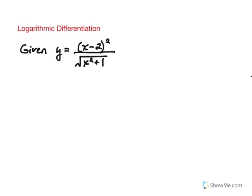Let's start by taking the natural log of both sides. There is a reason we use the natural log as opposed to the regular log with some other base. We would have the natural log of y on the left. On the right, when we take the natural log of that quotient, it's going to be the natural log of the numerator minus the natural log of the denominator, according to the laws of logarithms.